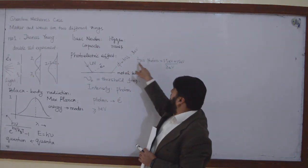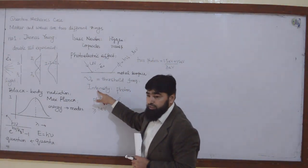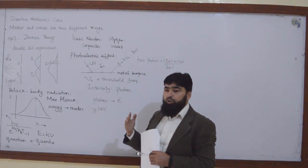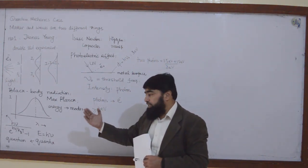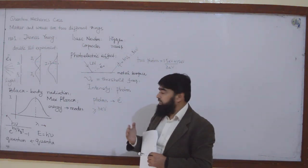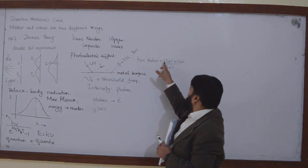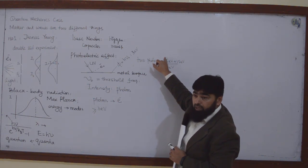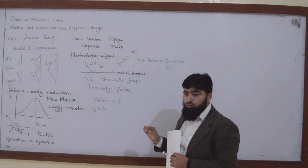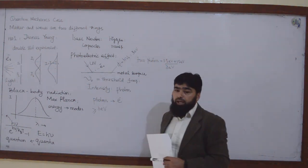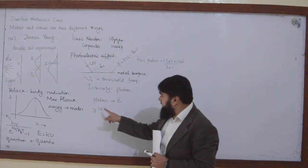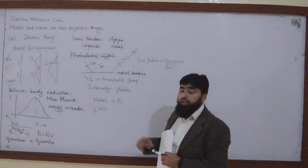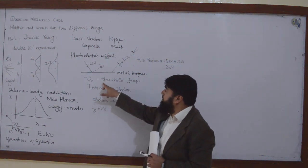The number of photons is the intensity. If you have 1, 2, 3, 4 photons — you are increasing the intensity, but their individual energy stays the same at 1.5 eV. So even if 100 photons come in with 1.5 electron volts each, they will not be able to eject the electron. But a single photon with energy equal to or greater than the work function can eject it. That is the difference.